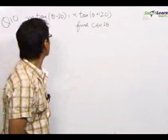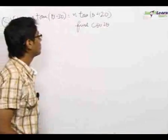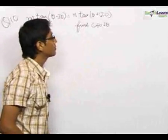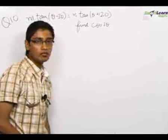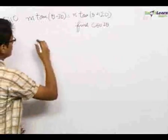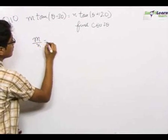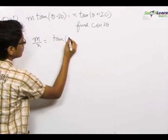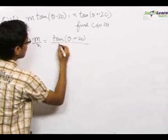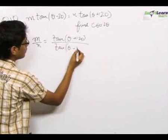In our 10th problem, we are given the equation m times tan(θ - 30°) is equal to n times tan(θ + 120°), and we have to find the value of cos 2θ. So we can write m upon n as tan(θ + 120°) upon tan(θ - 30°).